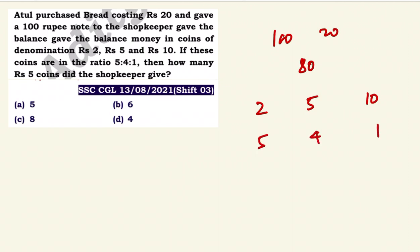Now we set up the equation. The value from rupees 2 coins is 2 into 5x, the value from rupees 5 coins is 5 into 4x, and the value from rupees 10 coins is 10 into 1x. This total equals 80 rupees. So 10x plus 20x plus 10x equals 80, giving us the value of x.